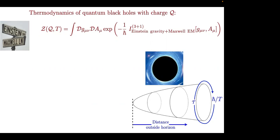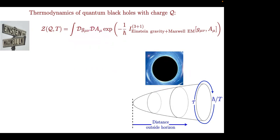What did Hawking do? He said: let me compute the quantum partition function of this theory. Take the action that Einstein and Maxwell gave us and do the Feynman path integral with the 1/ℏ factor about the saddle point of the metric and the vector potential. That's not even surely a well-defined thing, but Hawking boldly said: I don't care, I just take the saddle point.